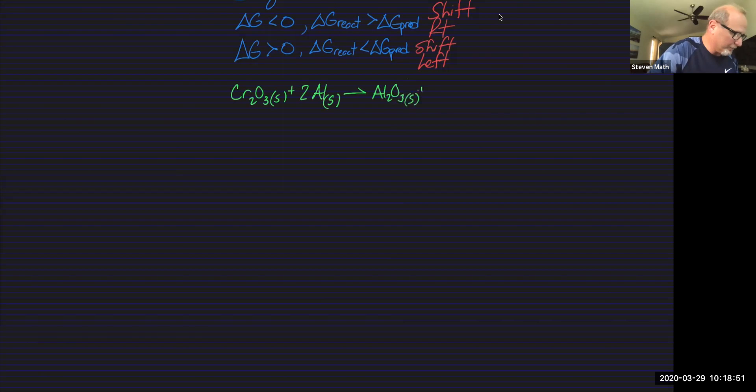And we calculated in that last one that delta G prime was negative 537 kilojoules. This was in the last video that we did. Feel free to go back and look at that. Now, if we're told that, what we want to know is calculate the value of K at 25 degrees.